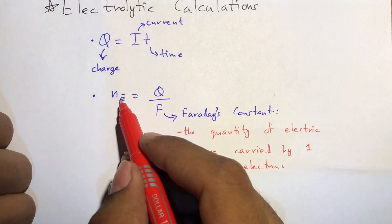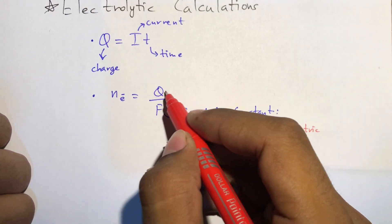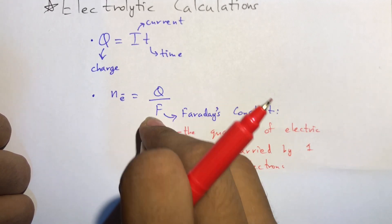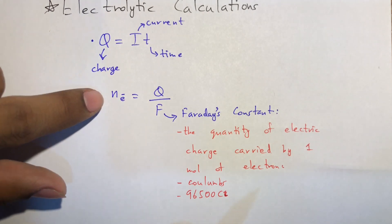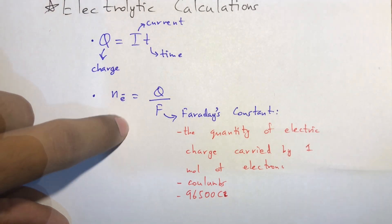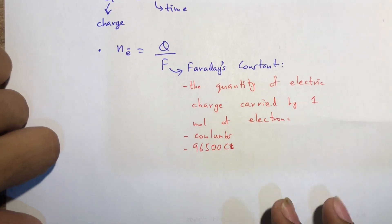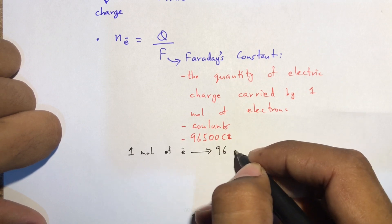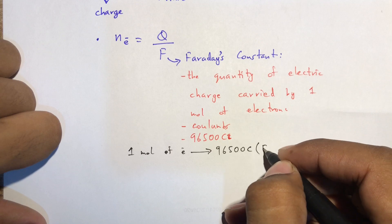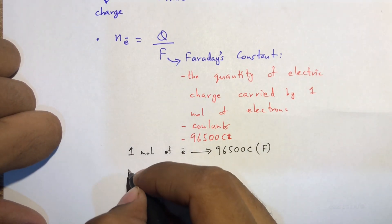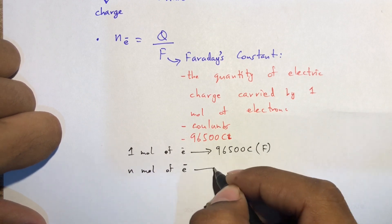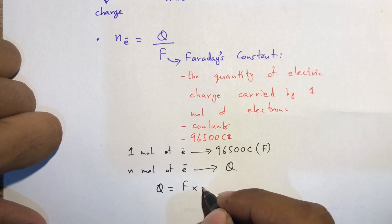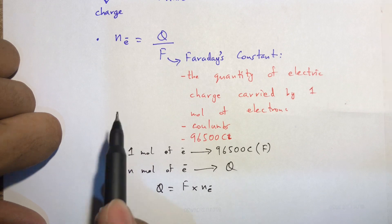How does the formula n = Q/F arise? If we have the charge of a given amount of electrons divided by the charge of one mole of electrons, this ratio gives us the moles of electrons. One mole of electrons has a charge of 96,500 coulombs, represented as F. So for n moles of electrons with charge Q, cross-multiplying gives Q = nF, and rearranging gives n = Q/F.